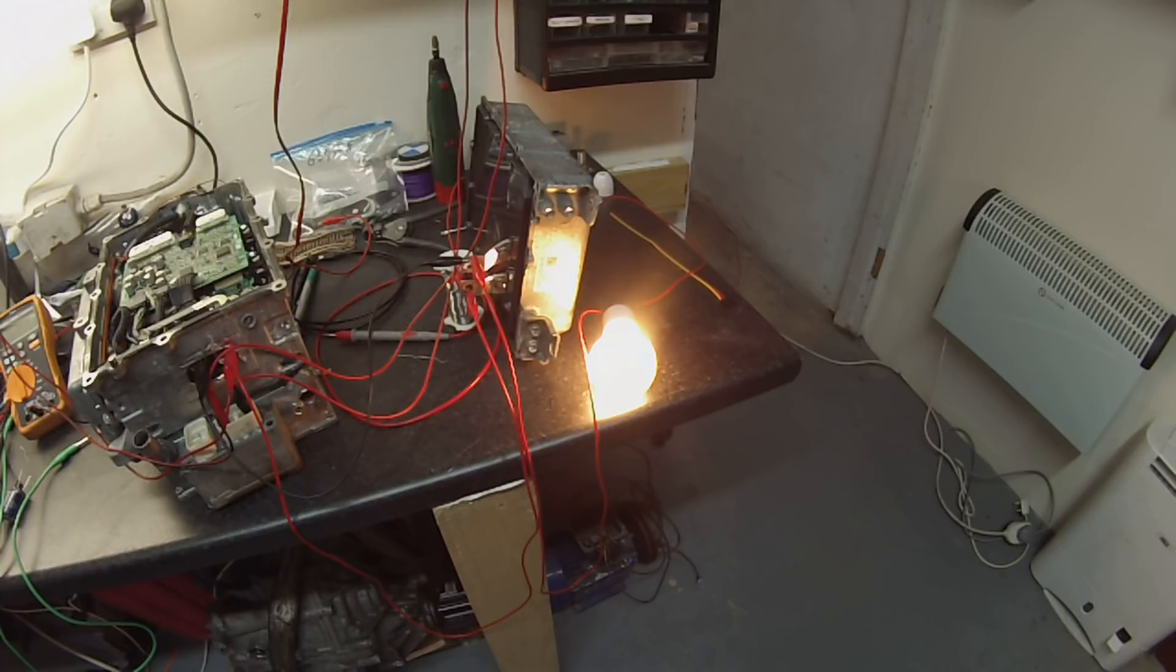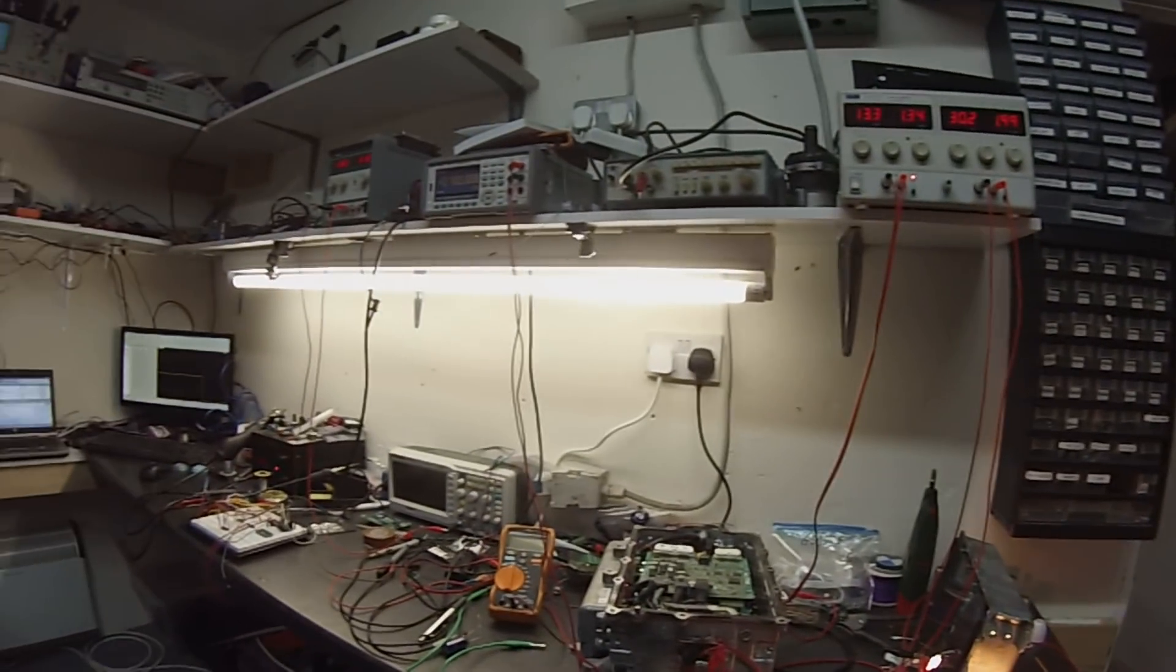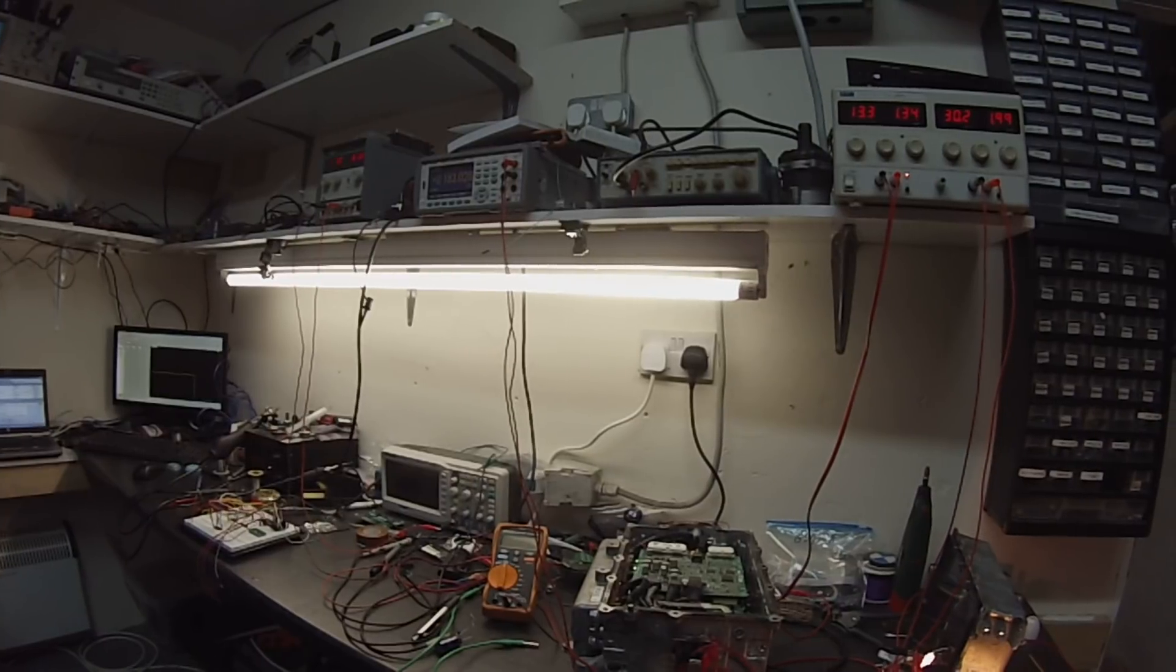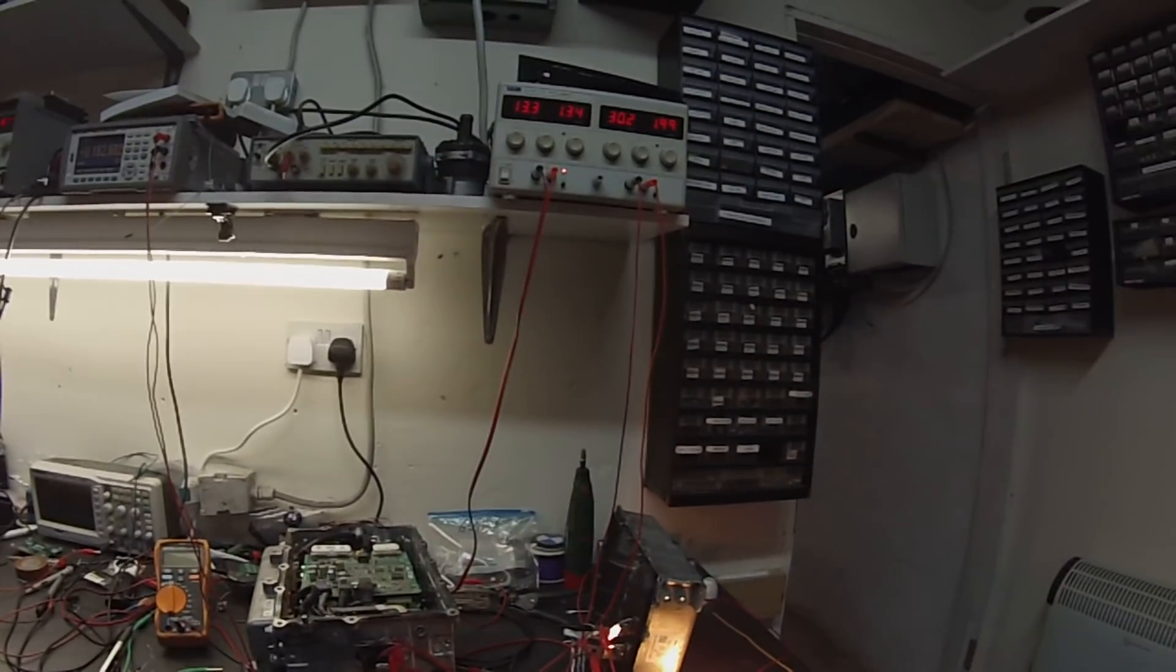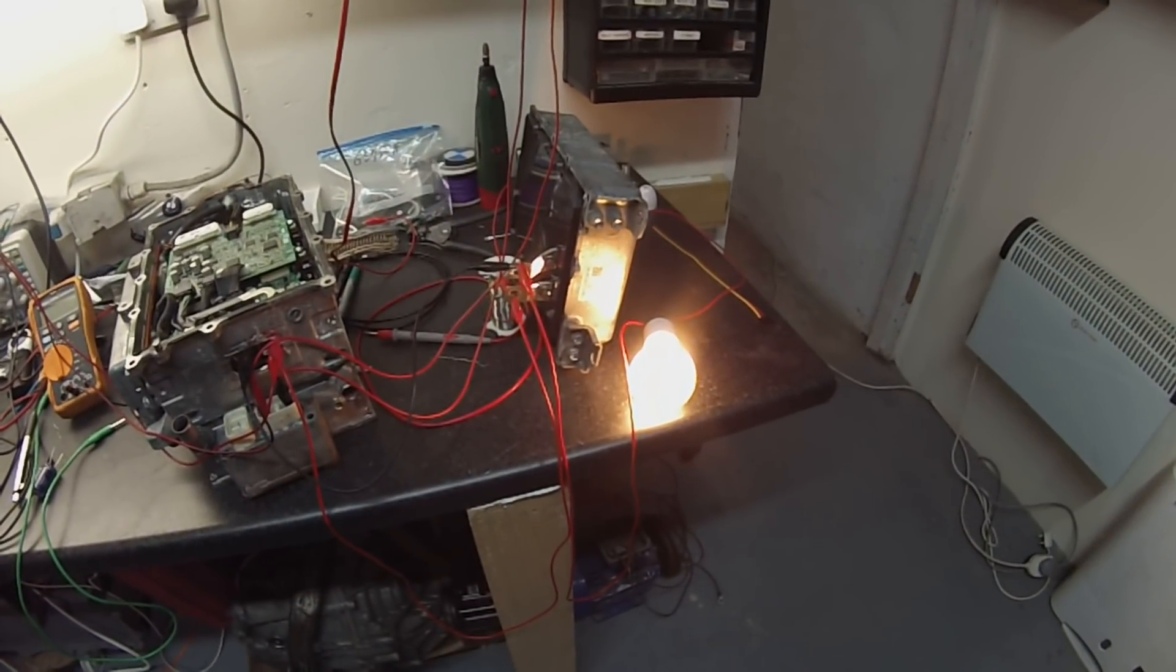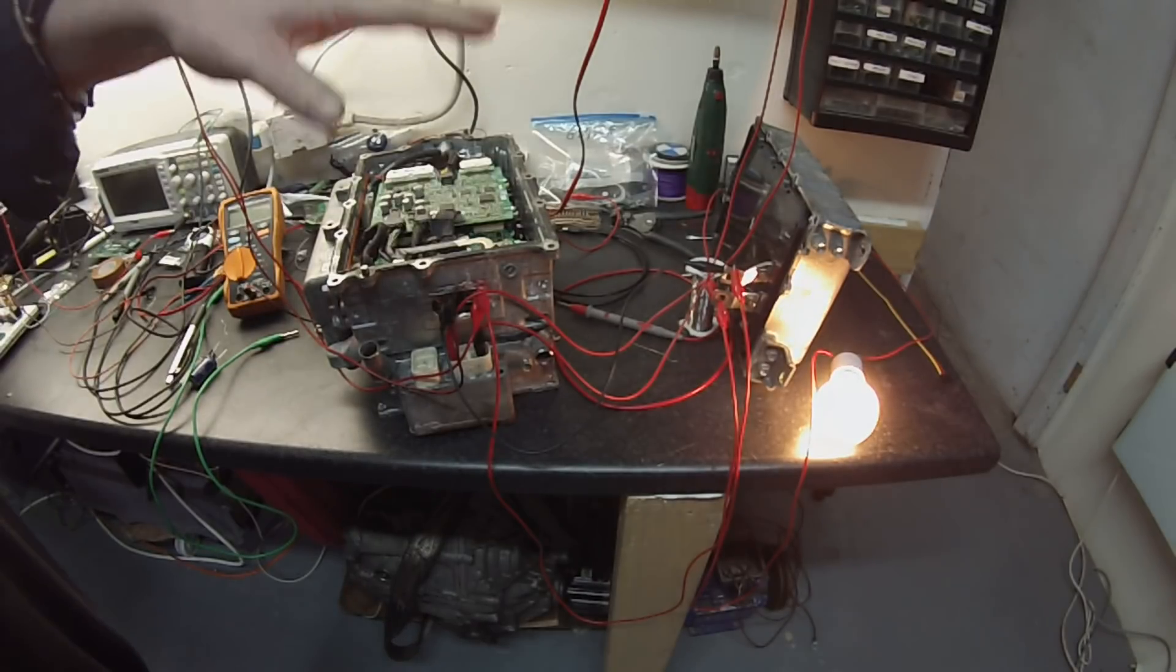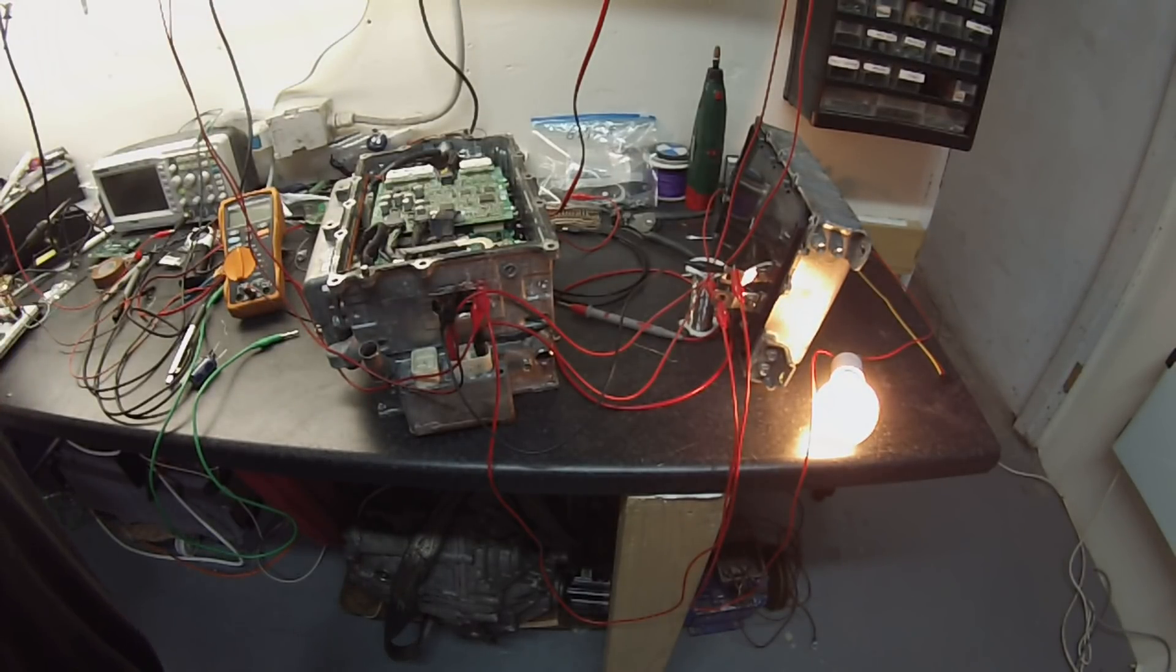I've only got a two amp power supply at the minute so it starts to draw two amps there, then it just basically goes into current limit. But we've got about 183 volts coming back out now. So that's 30 volts being boosted to 183. That's our booster converter running.